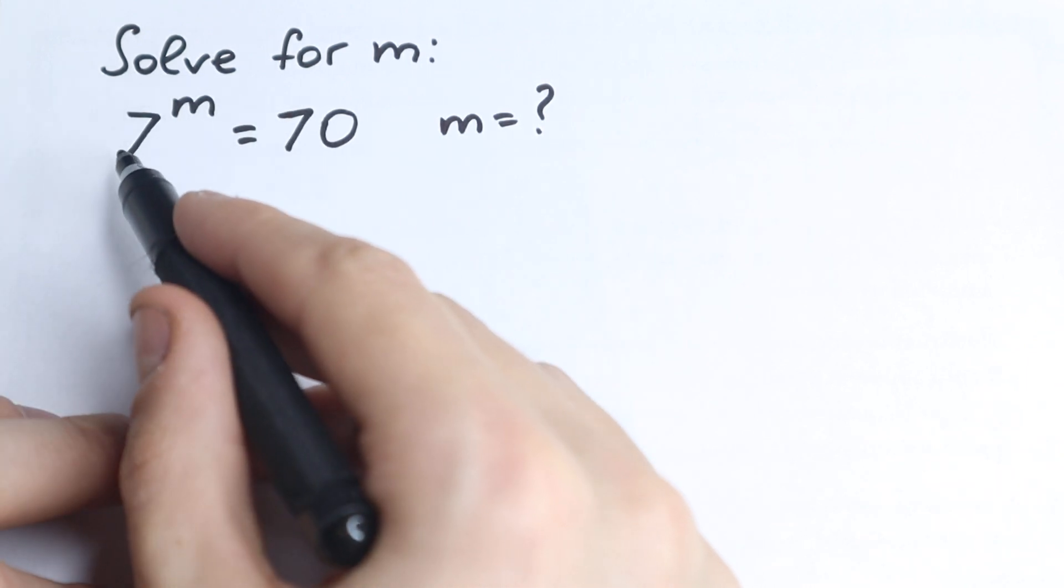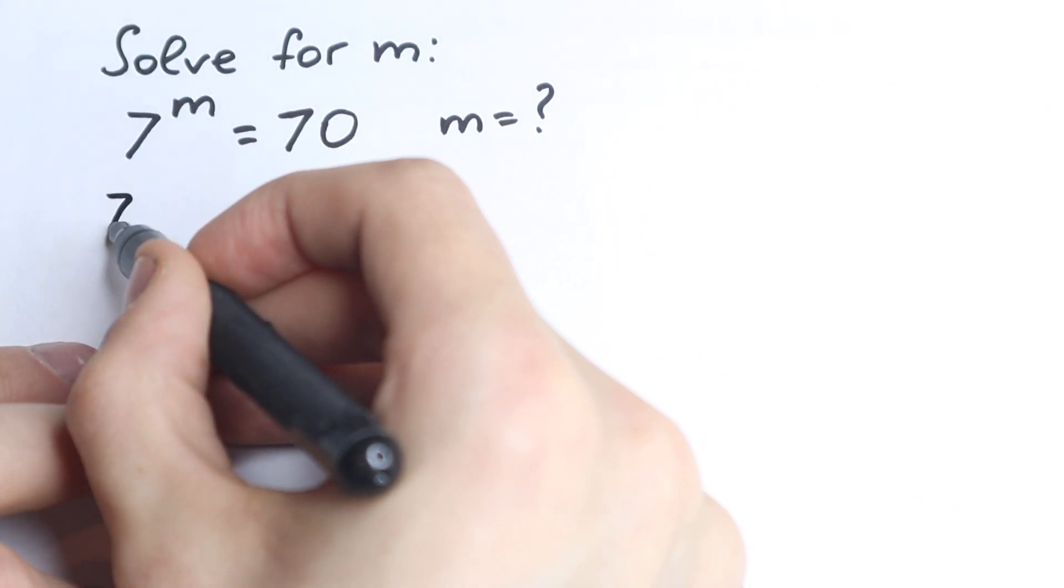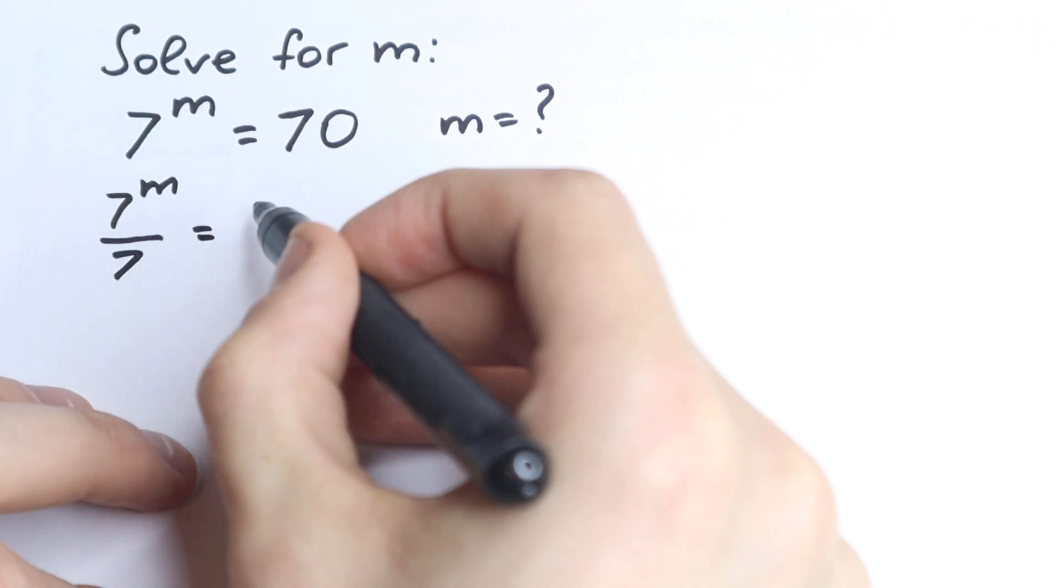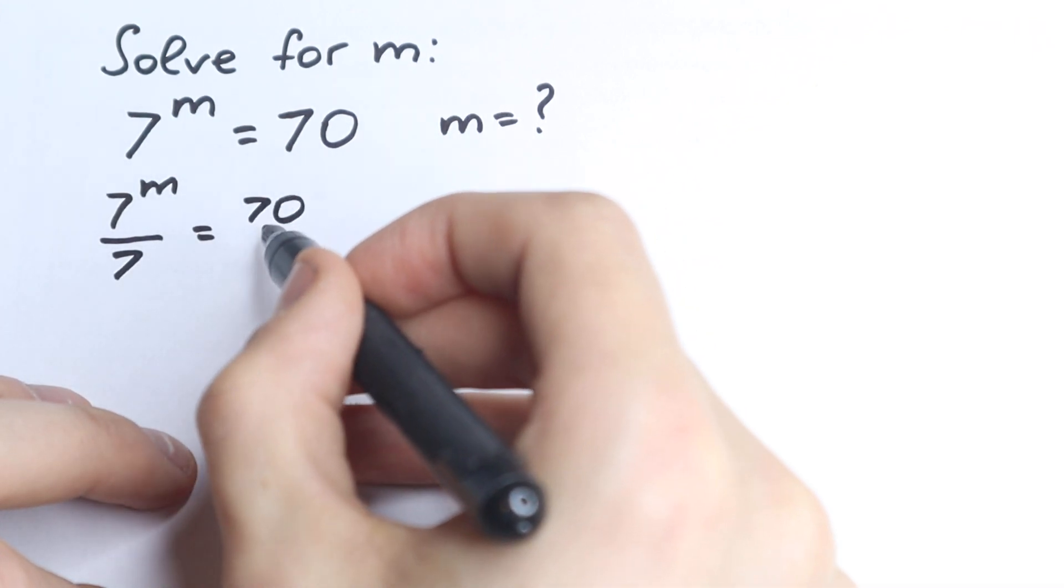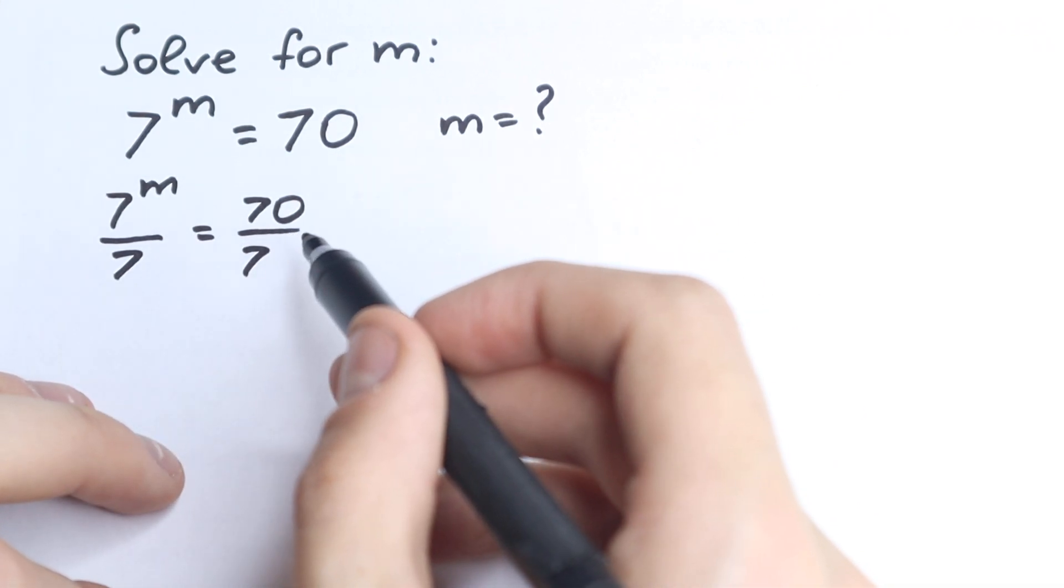So first of all, let's divide both sides by 7. Let's look at it. So 7 to the power m, we divide by 7 right here, so 7^m equals 70, we divide by 7. Both sides we divide by 7, which is our first step.